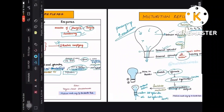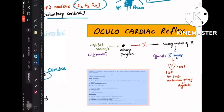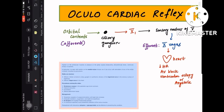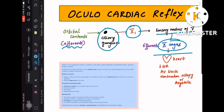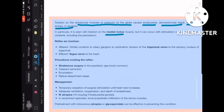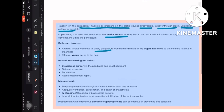The oculocardiac reflex: orbital contents send afferents to the ciliary ganglion, then to the ophthalmic division of cranial nerve 5 (trigeminal), then to the sensory nucleus of CN 5. The efferent is CN 10 (vagus) to the heart, causing decreased heart rate, AV block, and potentially ventricular ectopy or asystole. It is triggered by traction on extraocular muscles or pressure on the globe.